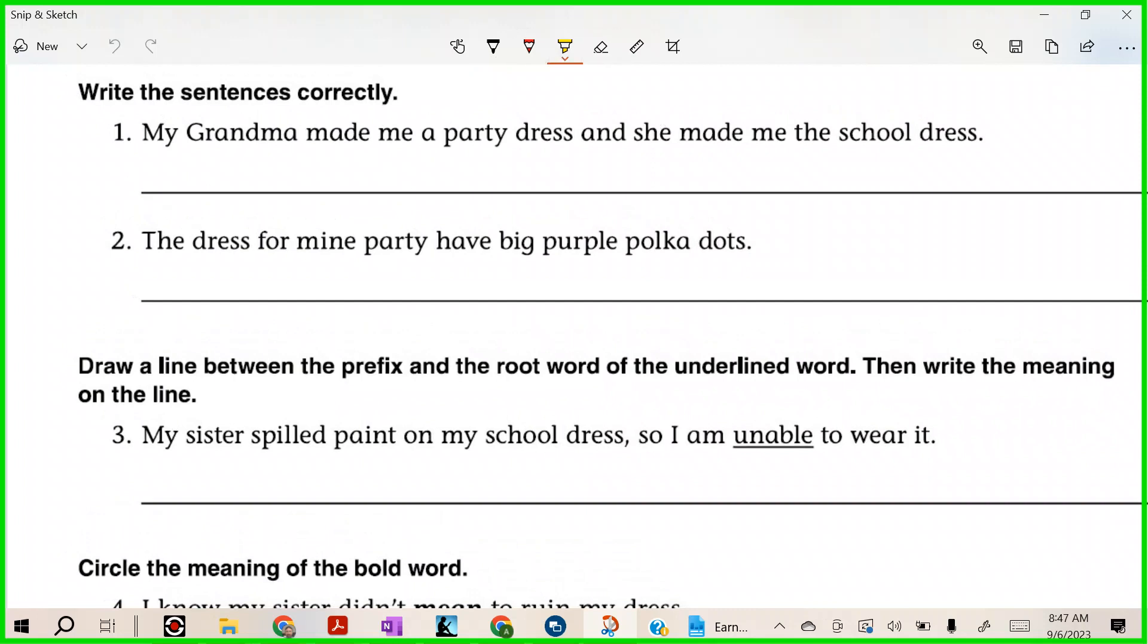I know I went over this with a couple of you. Brody, 'and' is the conjunction. What goes before the conjunction, Brody? A comma, very good. 'My Grandma made me a party dress, and she made me the school dress.' What should 'the' school dress be? It should be 'a' school dress, right?